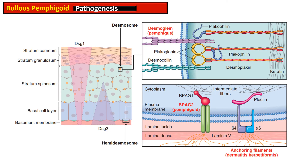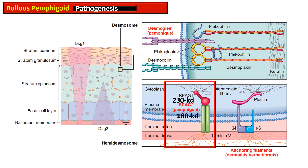The antigens for bullous pemphigoid are located within the hemidesmosomes. Bullous pemphigoid antigen 1 is a 230 kDa molecular weight protein connecting intracellular structural proteins with bullous pemphigoid antigen 2, which is a 180 kDa protein. BP antigen 2 attaches the tonofilaments and intracellular skeleton to the lamina densa, which contains many molecules of type 4 collagen.